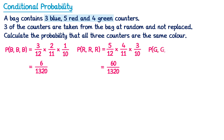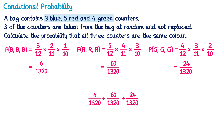Now we can do the probability of green-green-green. There are 4 greens so it'll be 4 over 12 on the first go, then 3 over 11 on the second go, and 2 over 10 on the final go. 4 times 3 times 2 gives 24, over 1320. Since all three routes work we add all of those probabilities together: 6 plus 60 plus 24 is 90, over 1320. So that's the answer, and we didn't need the probability tree diagram at all.